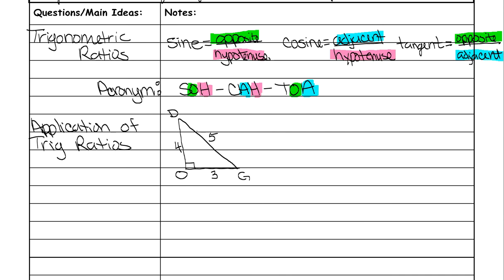First, we're going to look at finding the measure of angle D. You can take the sine, cosine, and tangent of angle D. In order to do that, we need to figure out what the opposite, adjacent, and hypotenuse are. So: sine is opposite over hypotenuse, cosine is adjacent over hypotenuse, and tangent is opposite over adjacent. We're going to look at it from angle D's perspective.